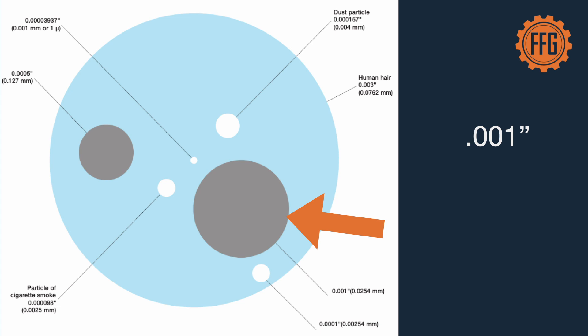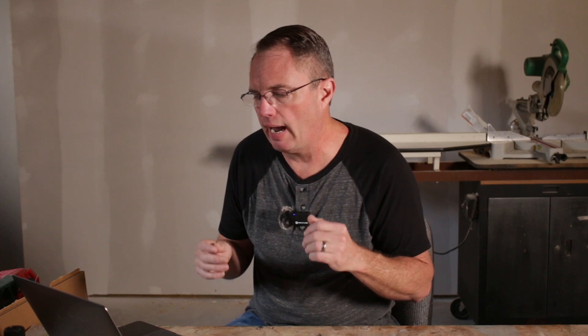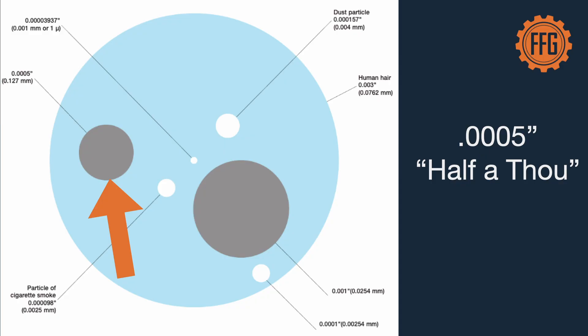The larger gray circle represents one thousandth of an inch, which is three times smaller than the human hair. One of the more common measurements is half a thou, shown by the smaller gray diameter.